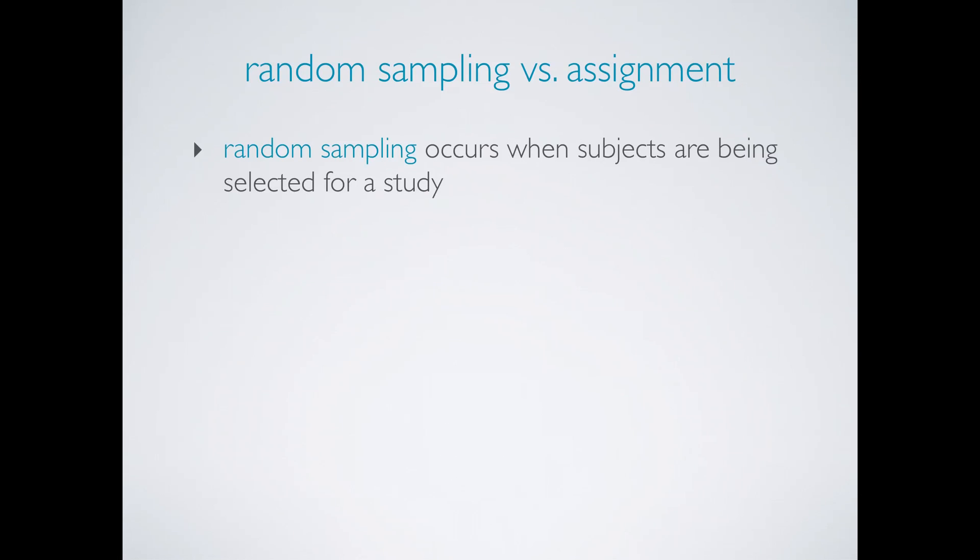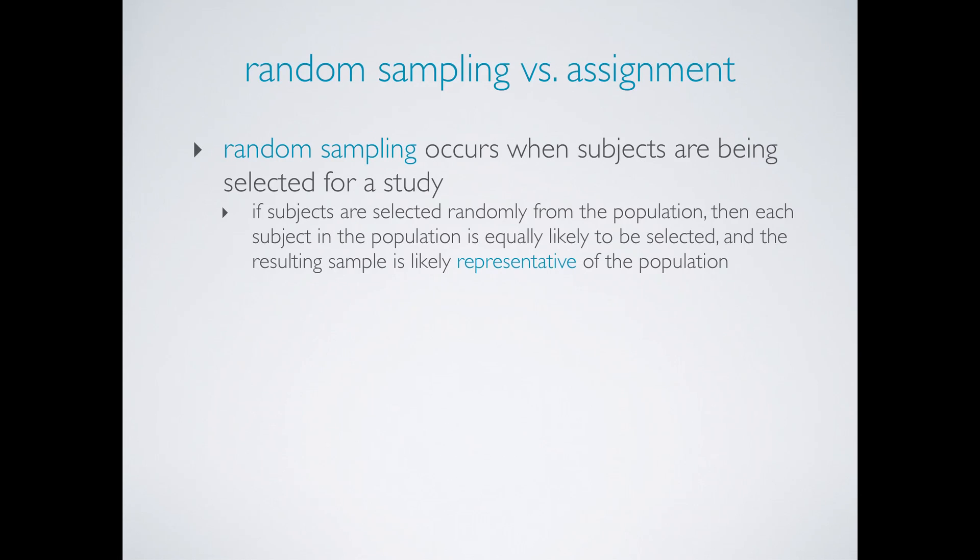Random sampling occurs when subjects are being selected for a study. If subjects are selected randomly from the population, then each subject in the population is equally likely to be selected and the resulting sample is likely representative of the population. Therefore the study's results are generalizable to the population at large.